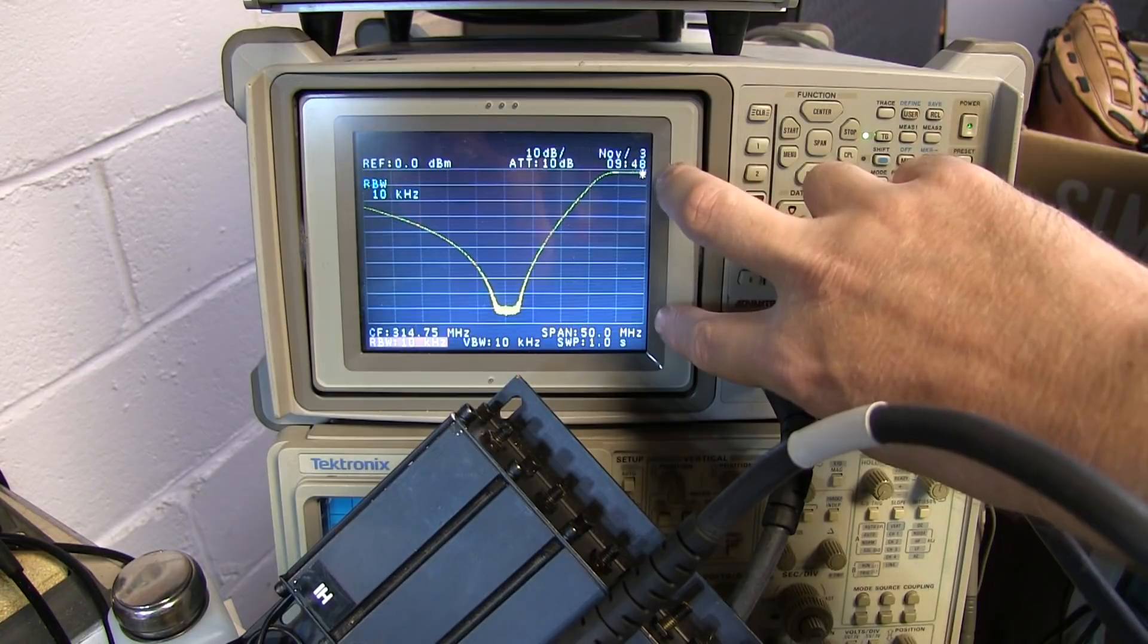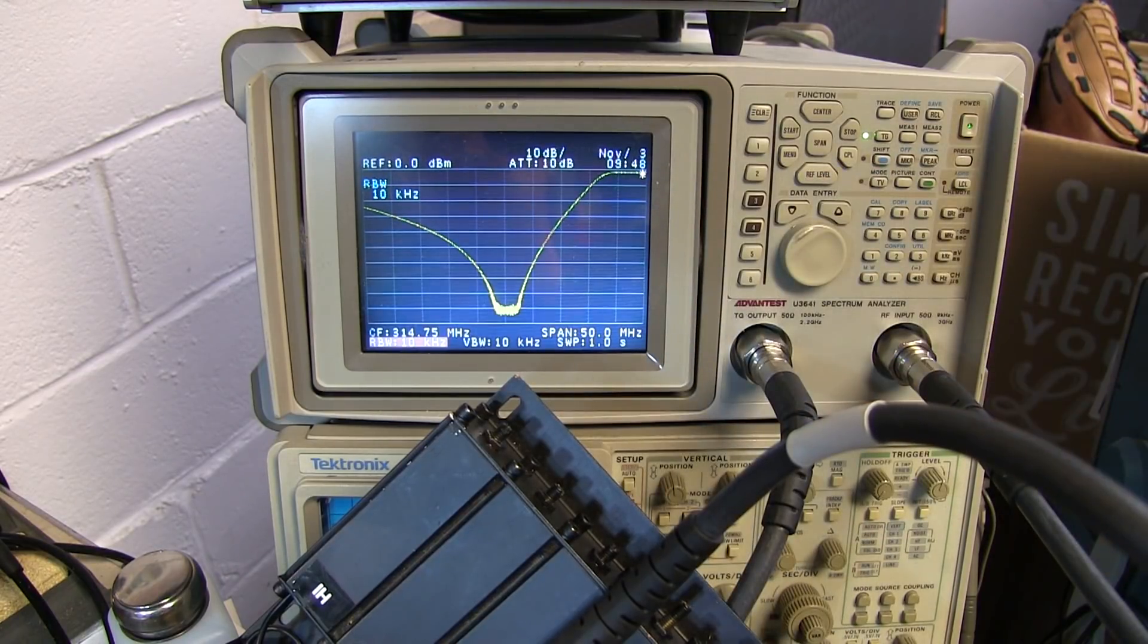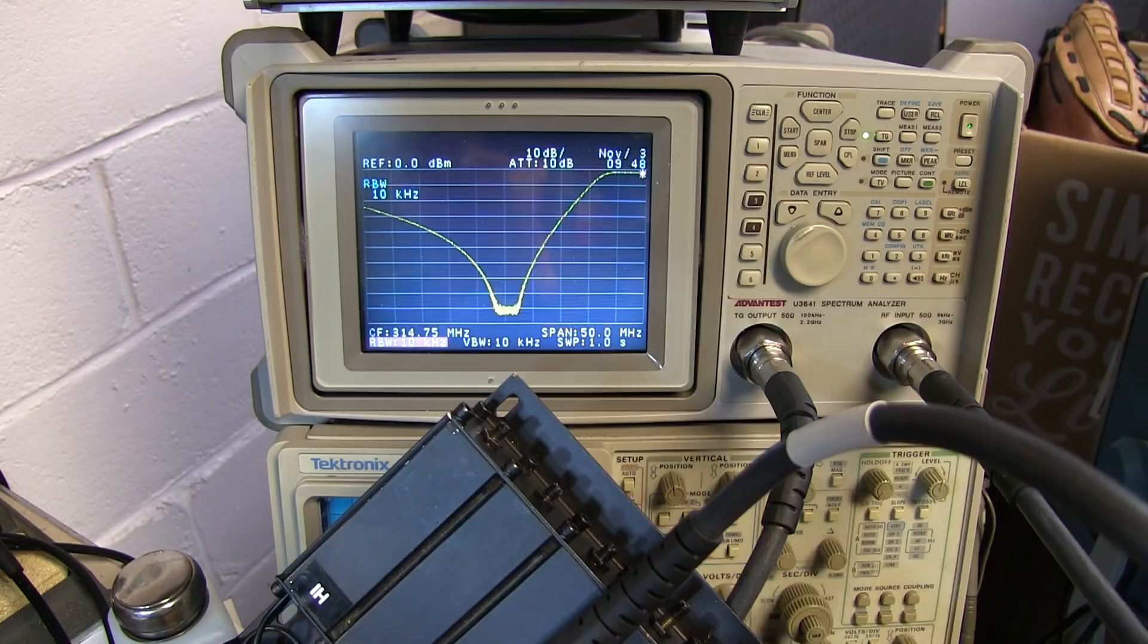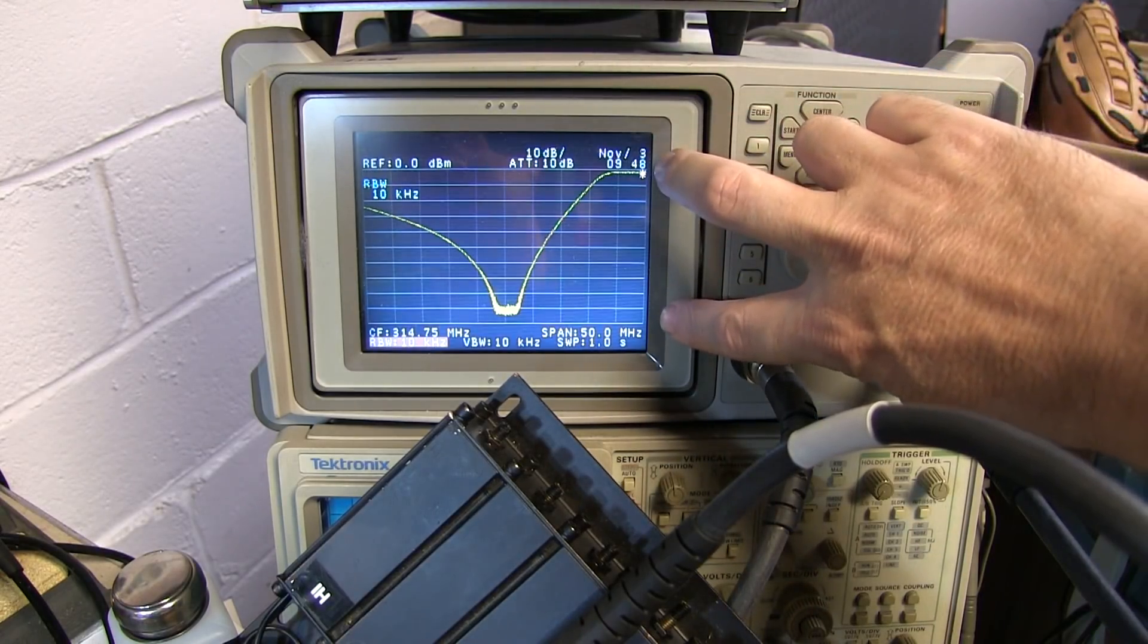That's probably about as deep as you're going to be able to go with most spectrum analyzers with a tracking generator. You're just not going to have enough dynamic range to see anymore.